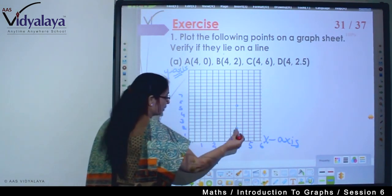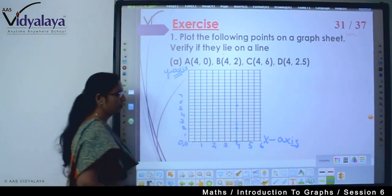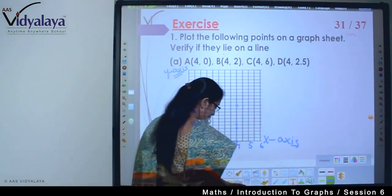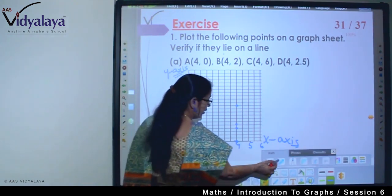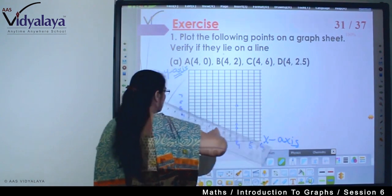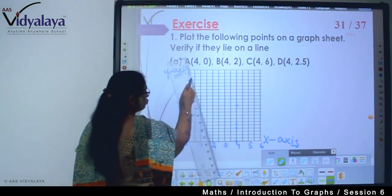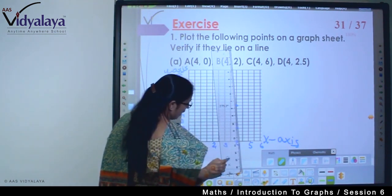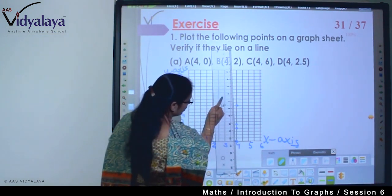Four two point five - since I took two blocks as one, the middle line gives me exactly two point five. Now I will take a scale and join these dots. Never join free hand, always take a scale.